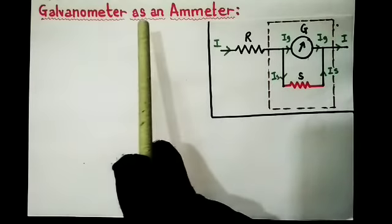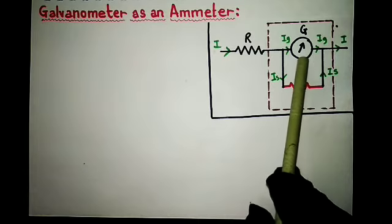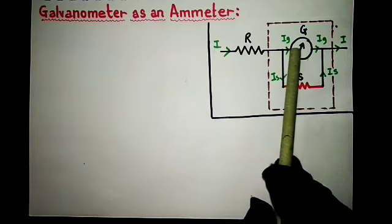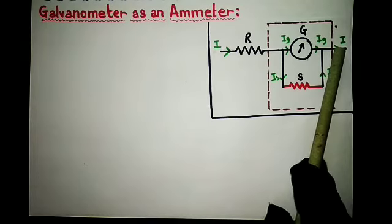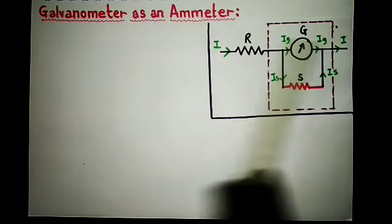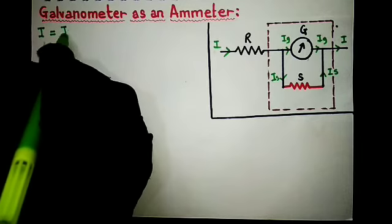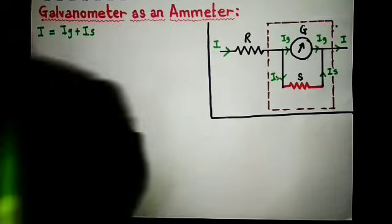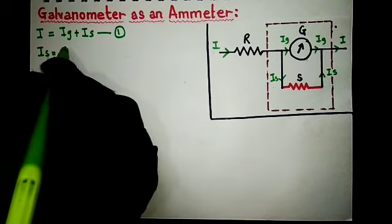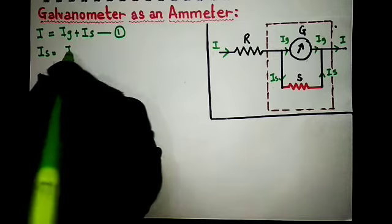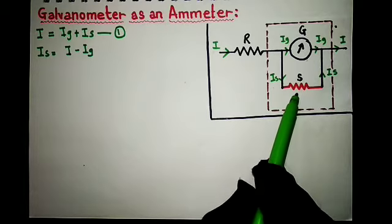Now let's consider: G is the resistance of the galvanometer, ig is the current flowing through the galvanometer, is is the current flowing through the shunt resistance, and i is the total current to be measured. So the total current i equals ig plus is — consider this equation number one. Therefore, is equals i minus ig.